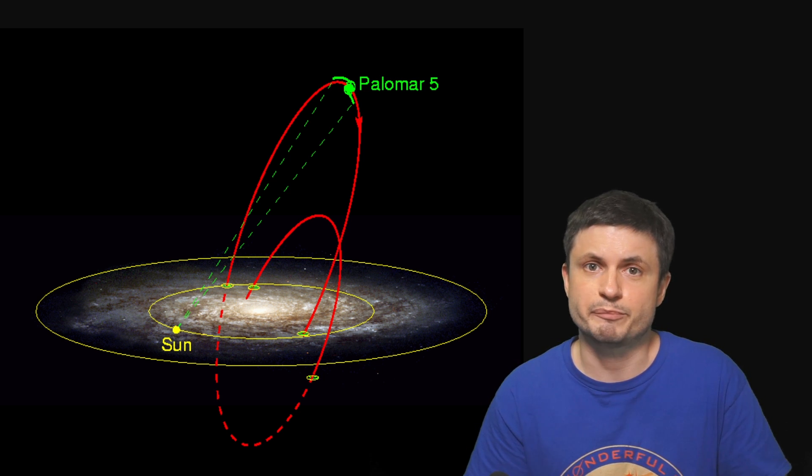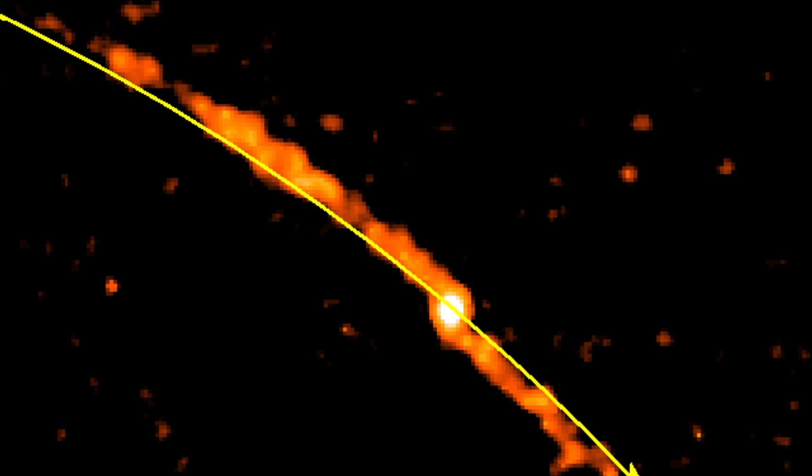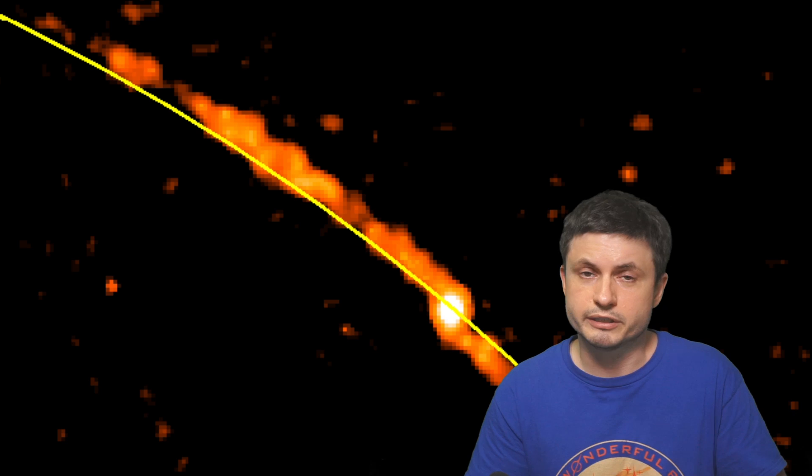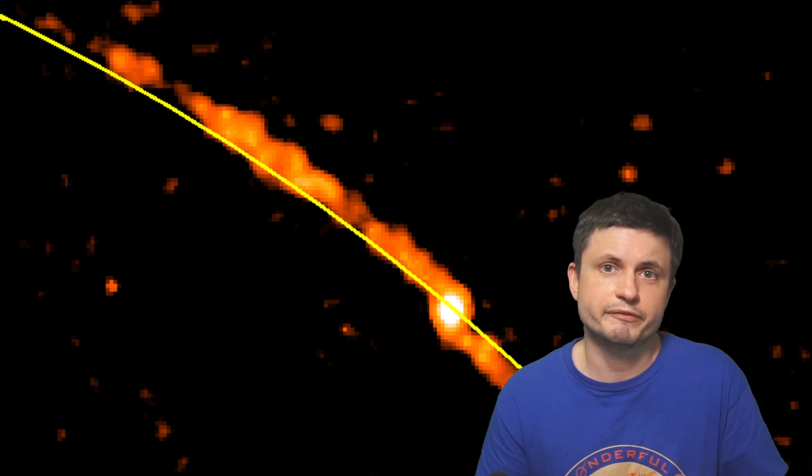First of all, it's about 10 times less massive than other clusters and it's at least five times longer than a typical globular cluster we're familiar with, making this a cluster that's about to become a stellar stream. It's not one yet, but it's definitely going to be one.